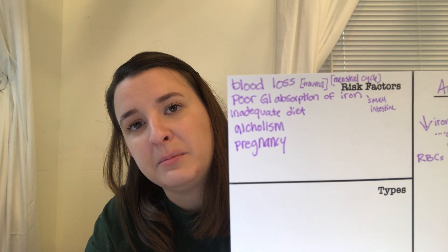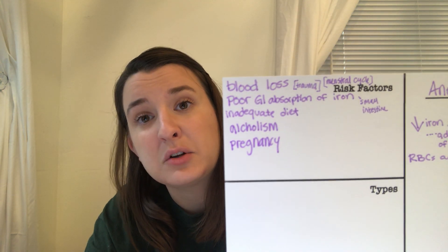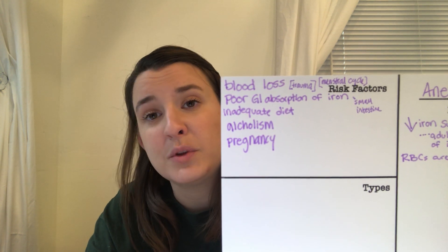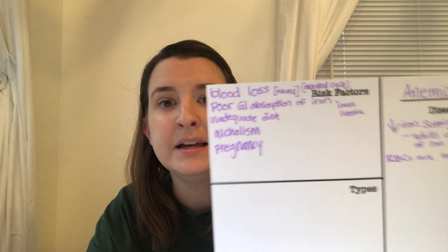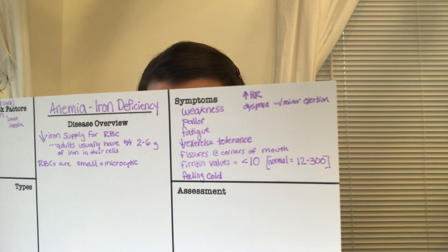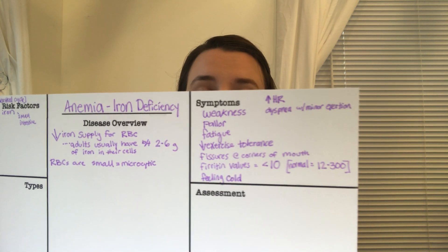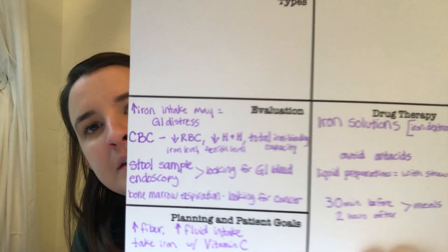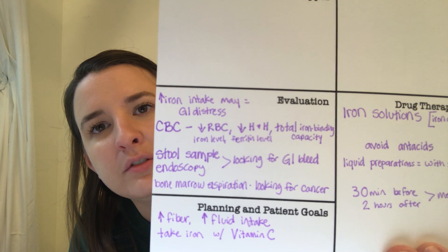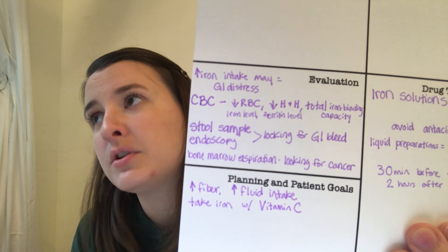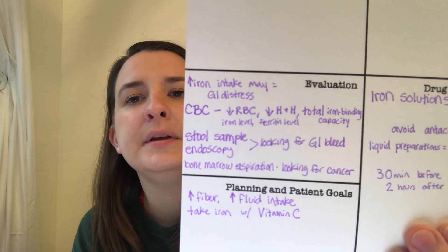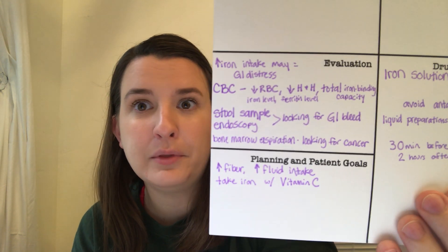To summarize iron deficiency anemia: risk factors include blood loss from trauma or menstrual cycle and poor GI absorption (e.g., issues with the small intestine). Key symptoms include increased heart rate. Evaluation considerations include noting that increasing iron intake — whether by supplement or diet — may cause GI distress.